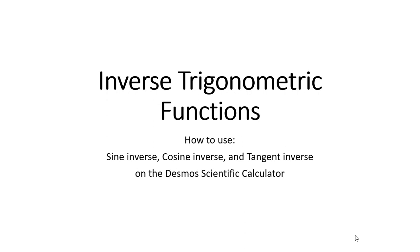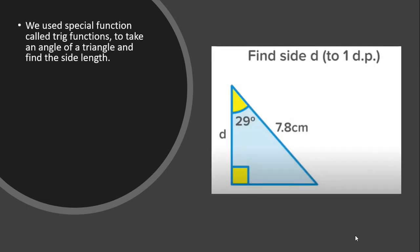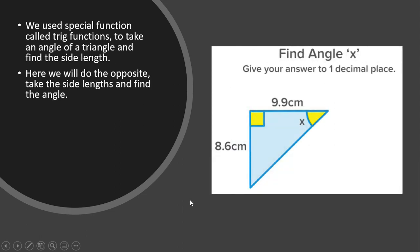Today we're going to learn how to use the inverse trig functions on our decimal scientific calculator — how to use sine inverse, cosine inverse, and tangent inverse. We use special trig functions to take an angle of a triangle to find the side lengths. On the previous lesson you saw this exact problem where you were asked to find side D, which is adjacent to angle 29, and 7.8 is the hypotenuse. Using SOHCAHTOA, adjacent and hypotenuse gives us cosine, so we used cosine to figure out the length of that side.